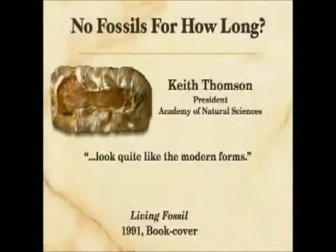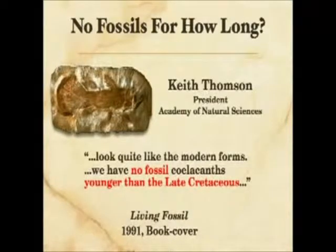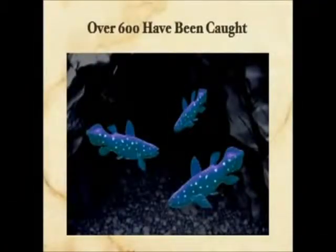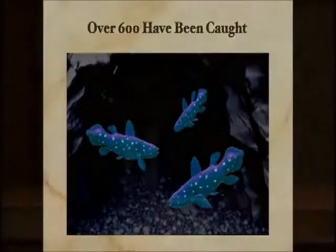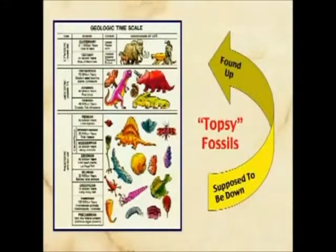They look quite like the modern forms, and yes, we have found them. We have no fossil coelacanths younger than the late Cretaceous — that's where the dinosaurs are supposed to have gone extinct — so we have plenty of them up to that point, and from that point forward, nothing. But so far we've caught about 600 of them out in the ocean since 1937 when we found the first one. If they stop in the column and you don't have them above, I think that just means they didn't live at those places — they lived at these places. The fact you don't find them up here doesn't mean they're not still around somewhere.